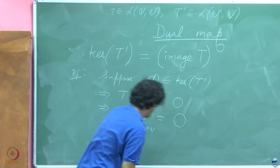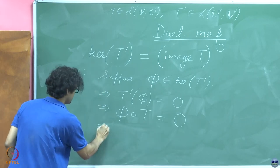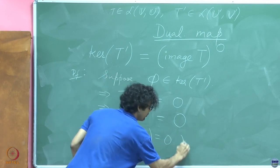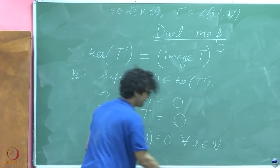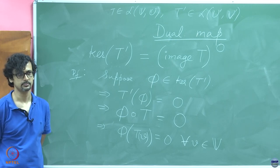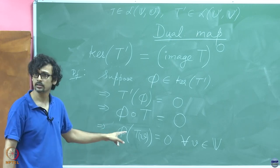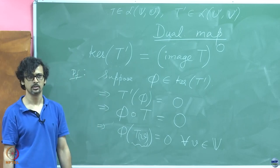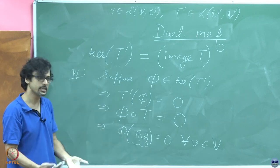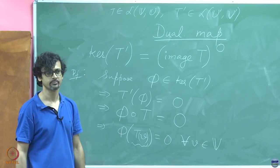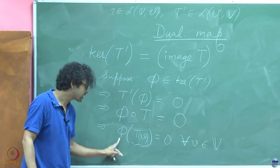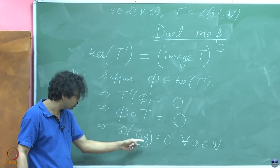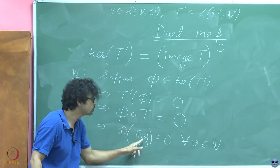So there you already have the hint of what is to come. That means φ acting on T(V) is equal to 0 for all V belonging to the vector space V. Any questions on this so far? This is true. But what are fellows like these also known to belong to? If you can choose any arbitrary fellow V and allow T to act on it, what you are essentially saying is that you give me anything from the image of T.